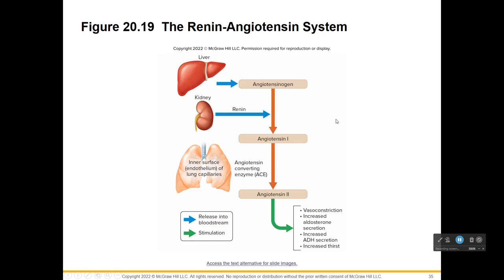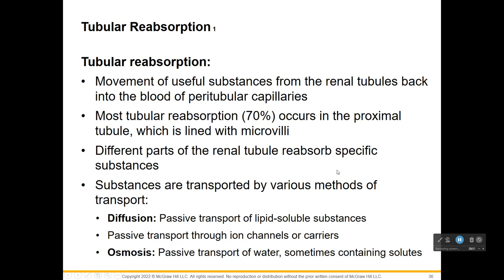Here's the renin-angiotensin system — star this slide. The liver creates angiotensinogen. The kidneys make renin, which activates angiotensinogen into angiotensin 1. ACE (angiotensin-converting enzyme) converts angiotensin 1 to angiotensin 2. Angiotensin 2 stimulates increased ADH secretion — antidiuretic — so you retain water, get thirsty, pee less, and blood pressure comes up. We're going to pause here and start back with tubular reabsorption.